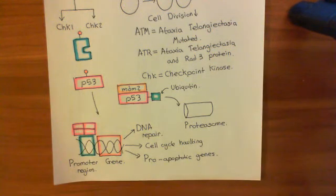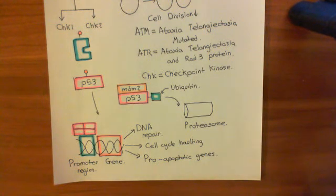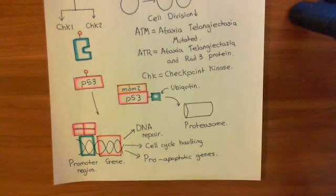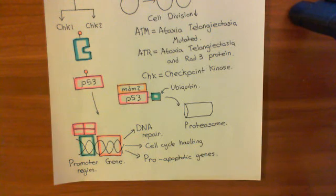Mitomycin C is also used as an antibiotic. It will go into bacterial cells and again form inter- and intrastrand crosslinks within the bacterial genome. This will stop the activity of RNA polymerases, stopping protein synthesis, and stop the activity of DNA polymerases, stopping genome replication, and that will stop the division of the bacterial cells.